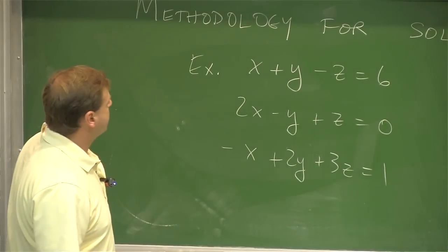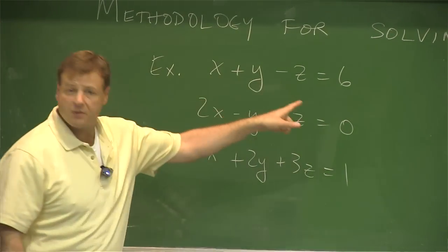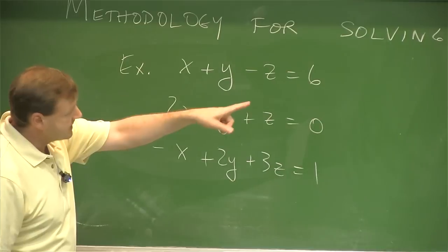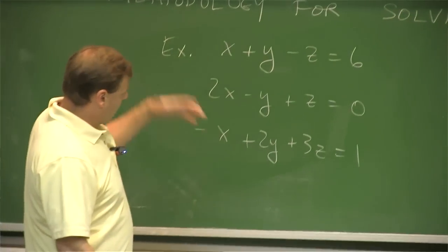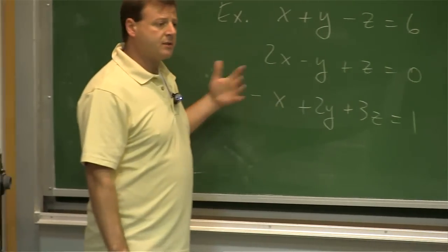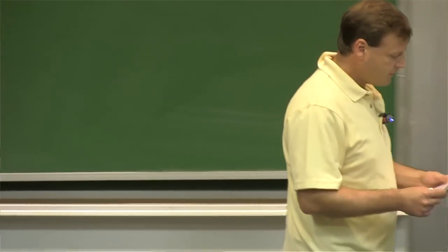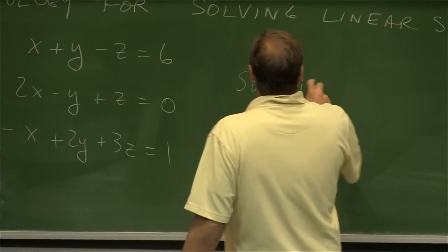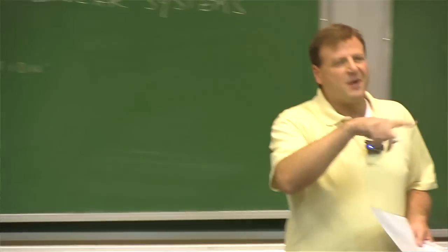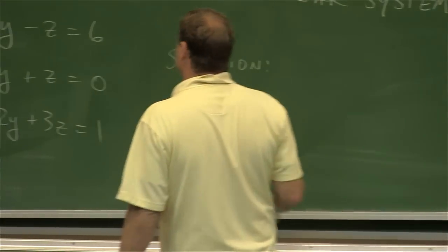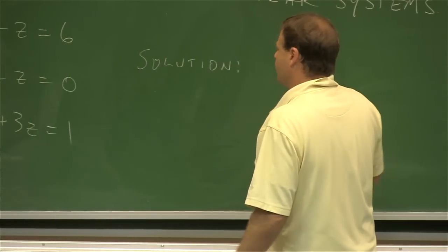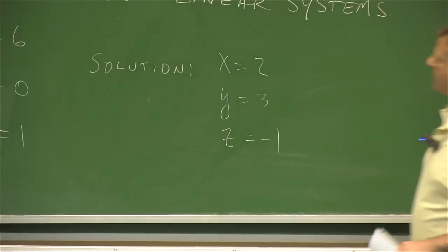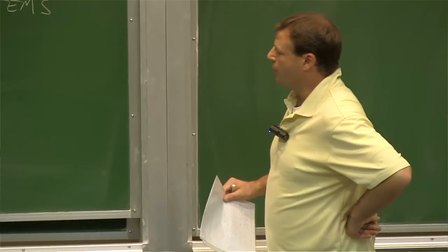So there's a good old linear system. The word linear applies because all the variables only have powers of one, and the word system means I have multiple equations. I want to find one solution that satisfies every equation simultaneously — that's the goal, if it exists. In this case it is going to exist. The solution is x equals 2, y equals 3, and z equals negative 1.